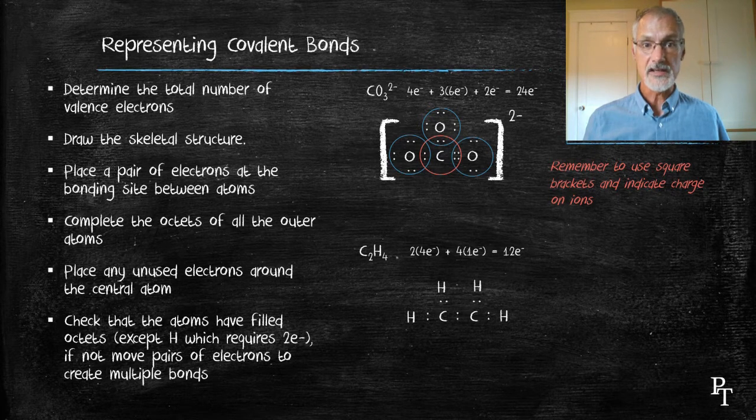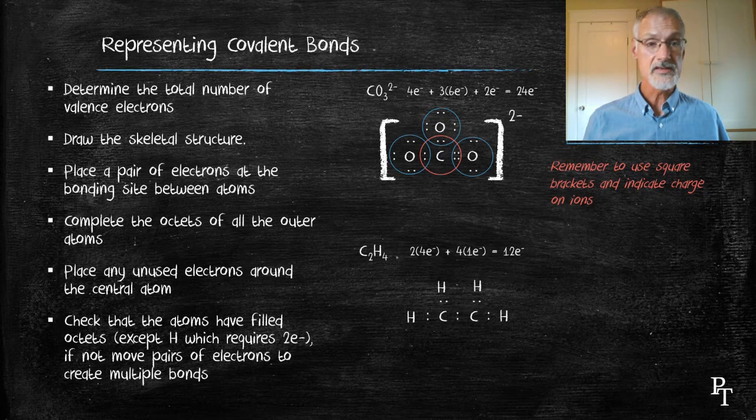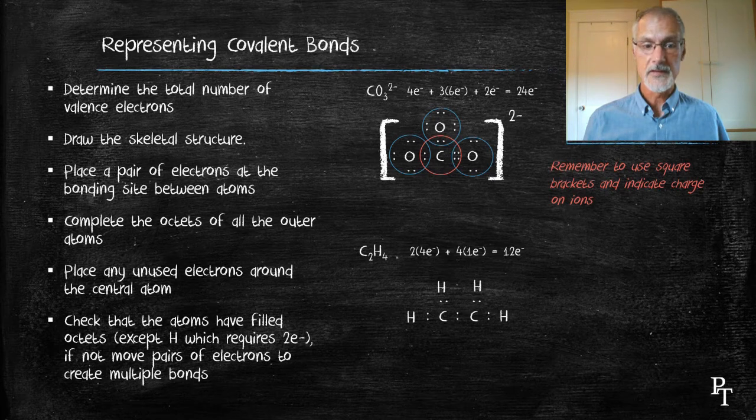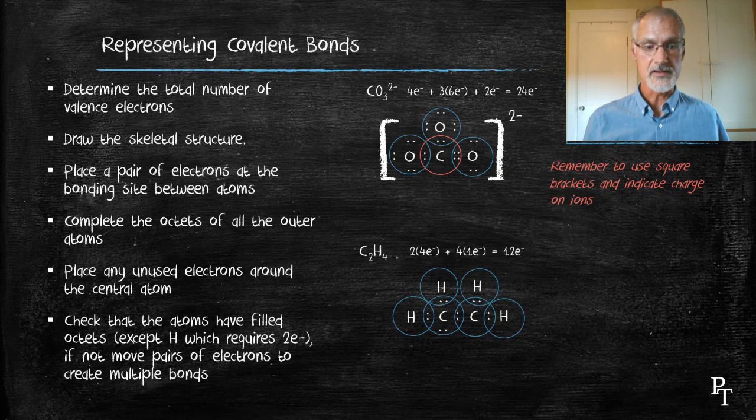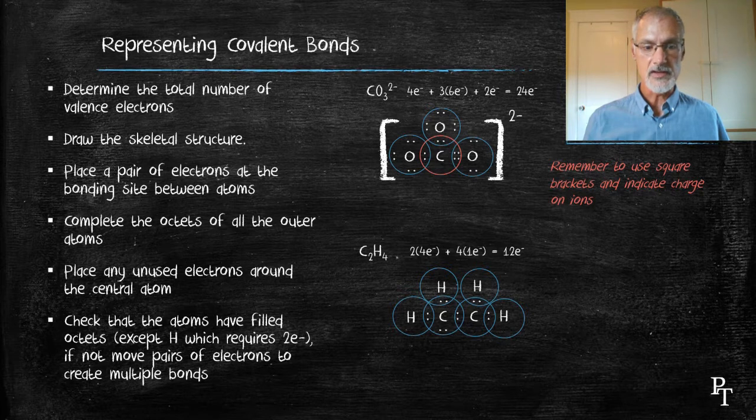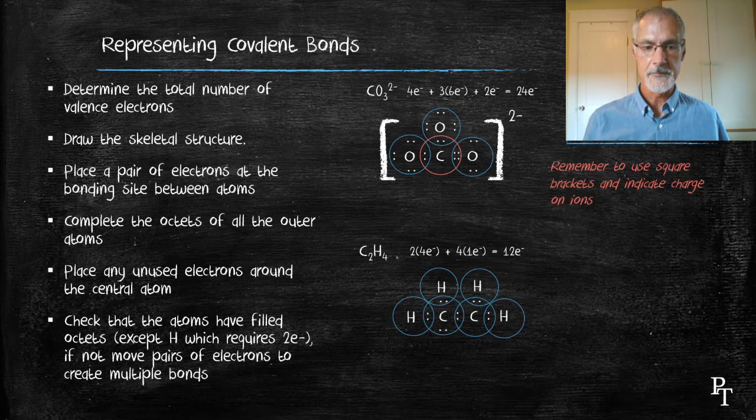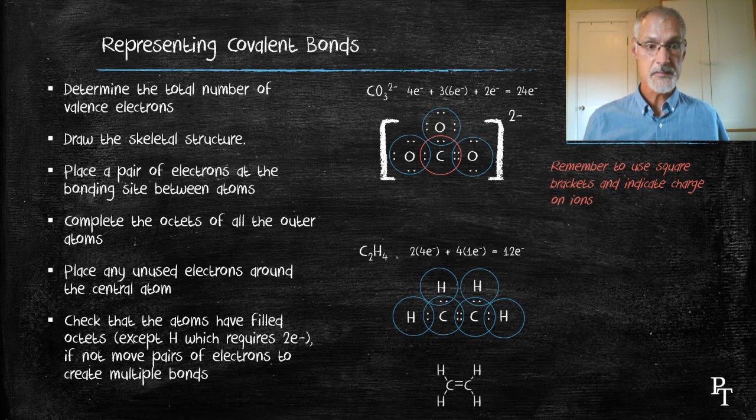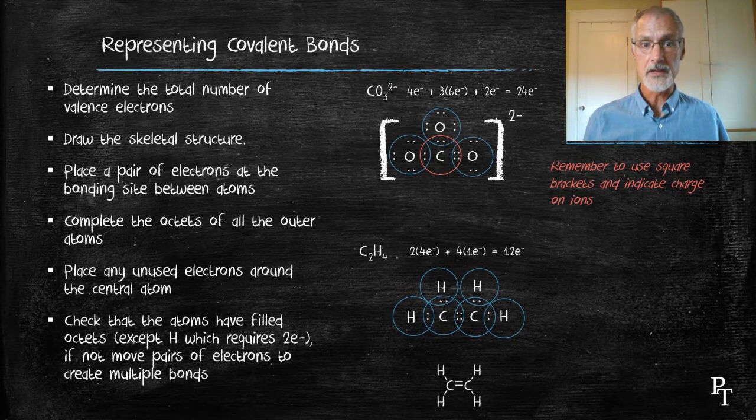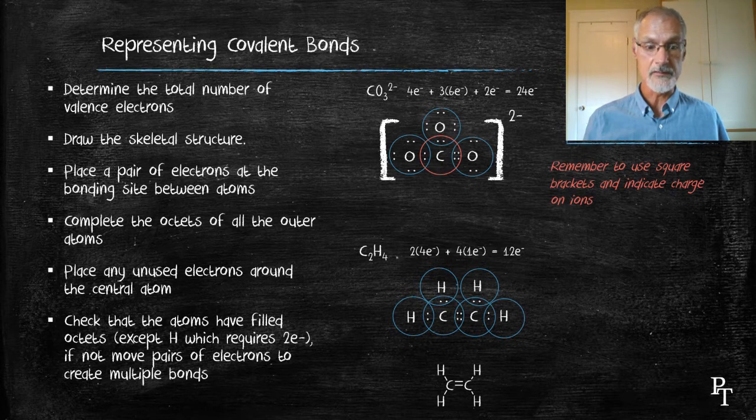And now I complete the octets of the atoms on the outside. In this case, hydrogen is full. But I still have two electrons left, so I'll give them to a carbon. Quick inspection indicates that one of the carbons is satisfied and the other one is not. To remedy that situation, we'll create a double bond in there. And that gives the following abbreviated structure. You'll notice in this particular molecule, there's no unbonded pairs of electrons that we have seen in some of the other molecules.